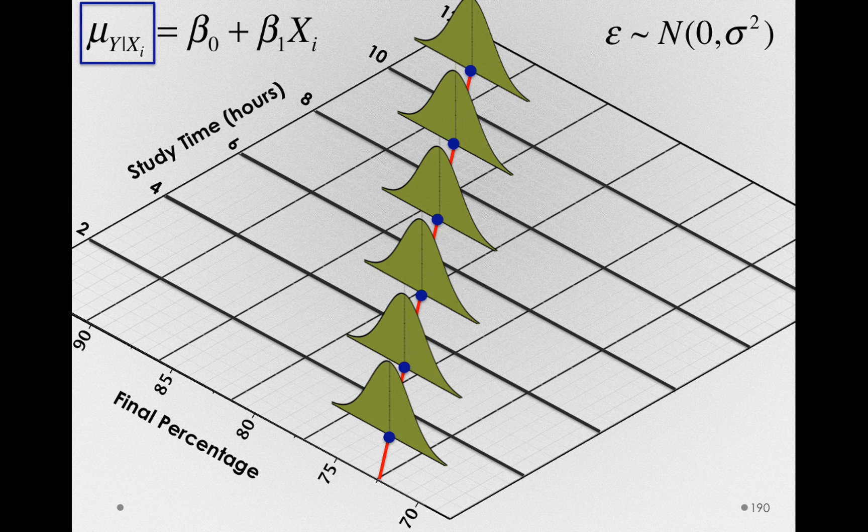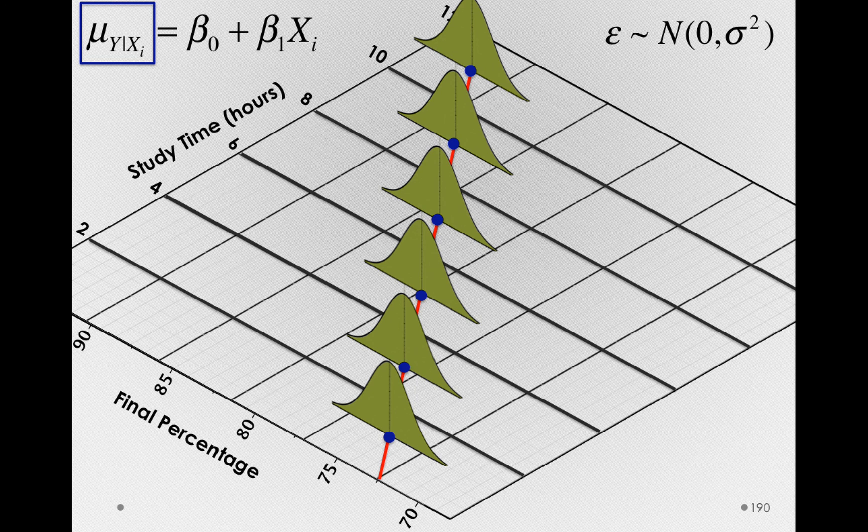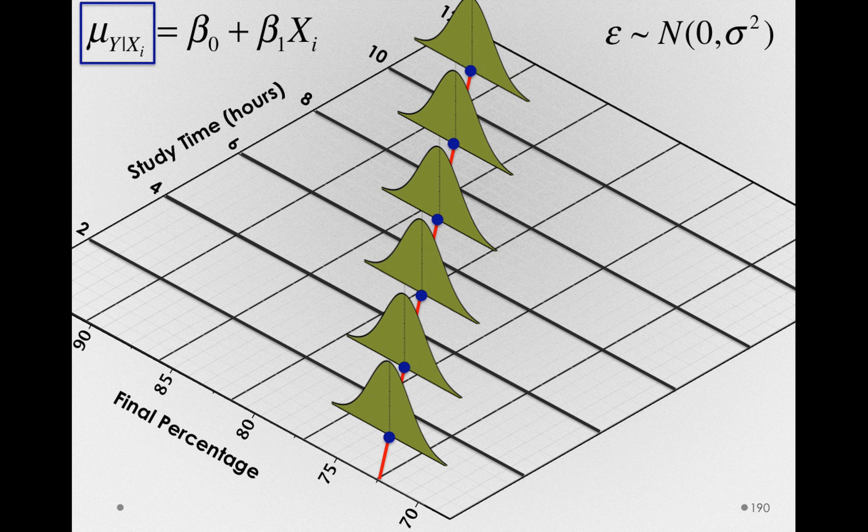Take a second to absorb the meaning of this. In the population, individuals do not all get the same score, even if they study the same amount. And that's what these distributions represent. But notice that our line, our beta 0 plus beta 1 xi, is not predicting individuals.